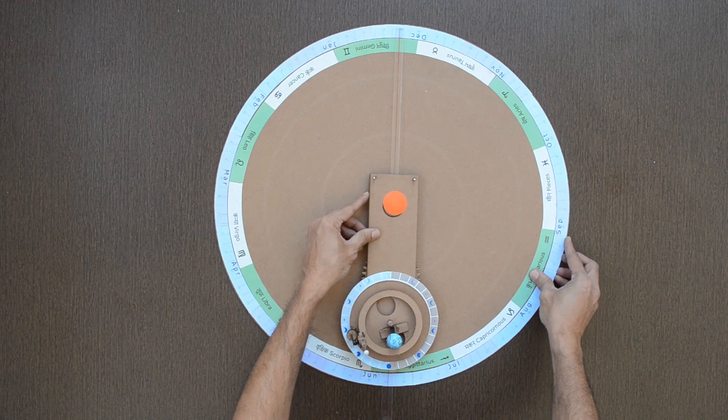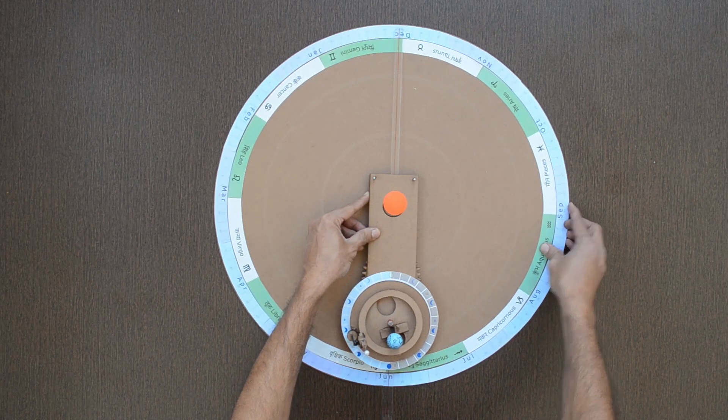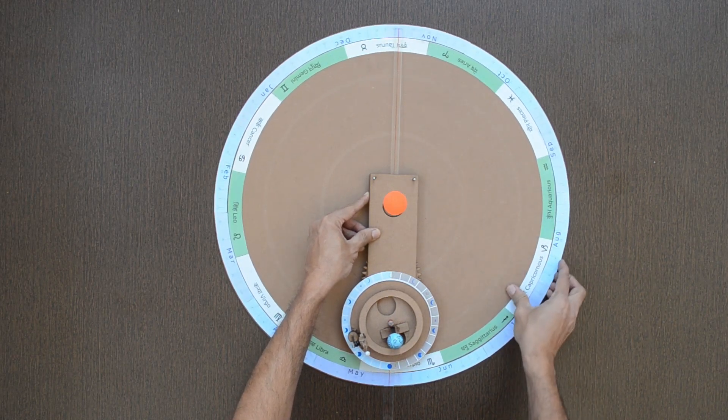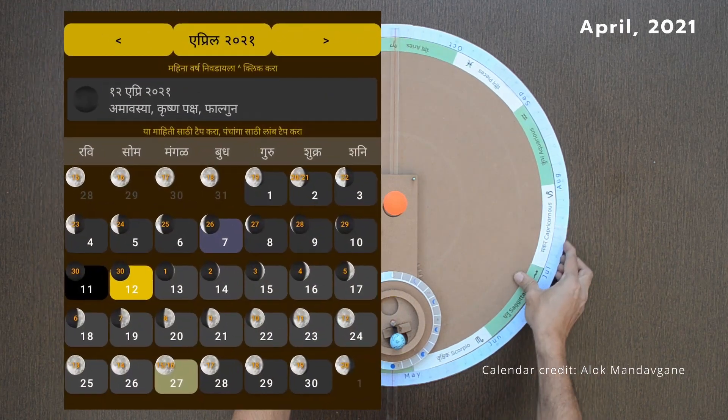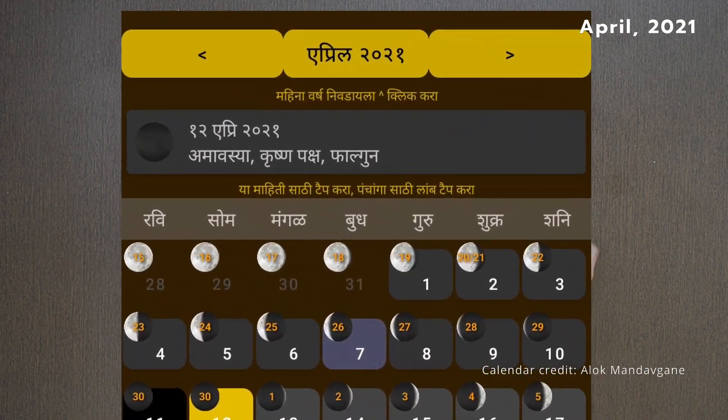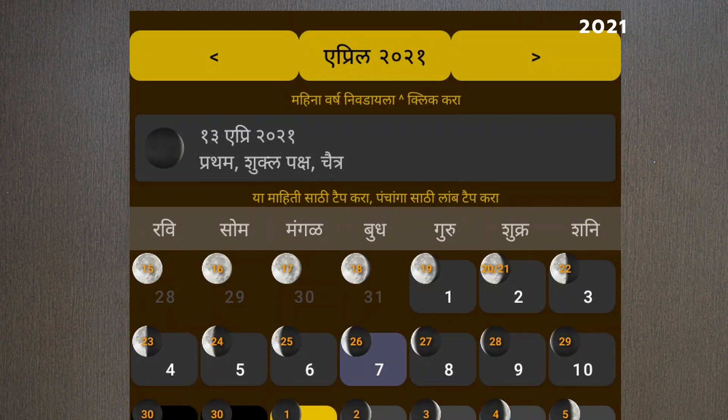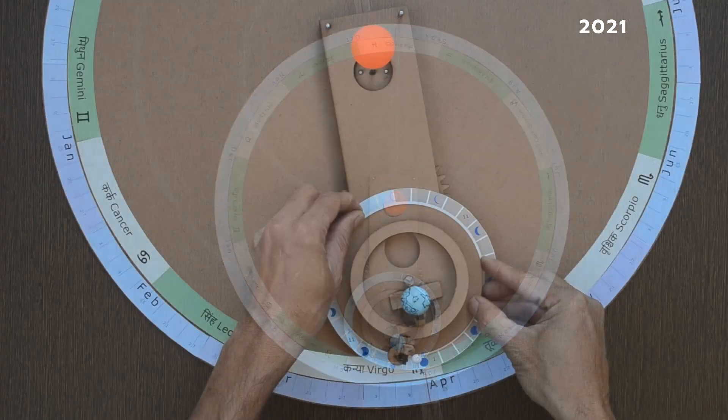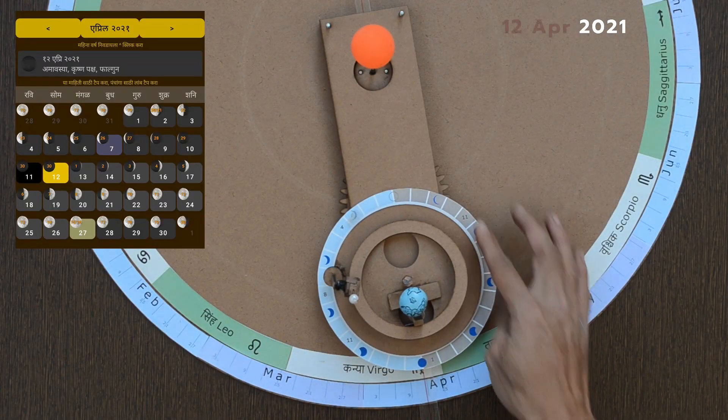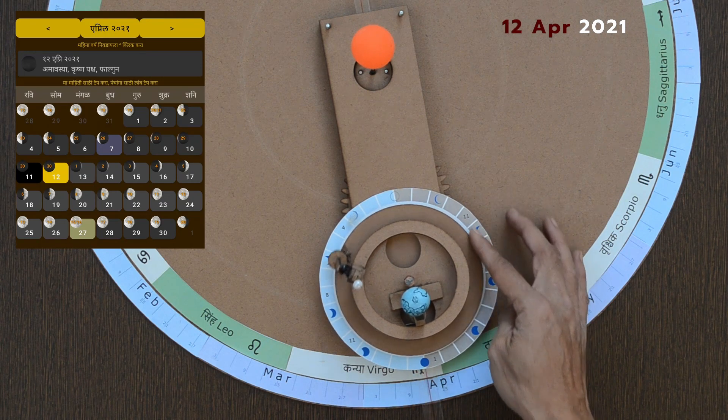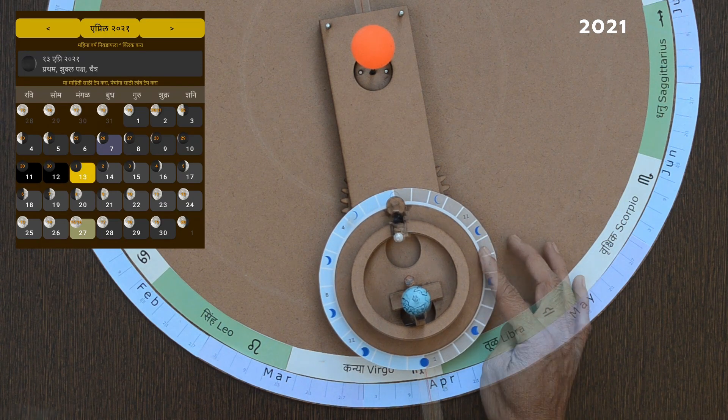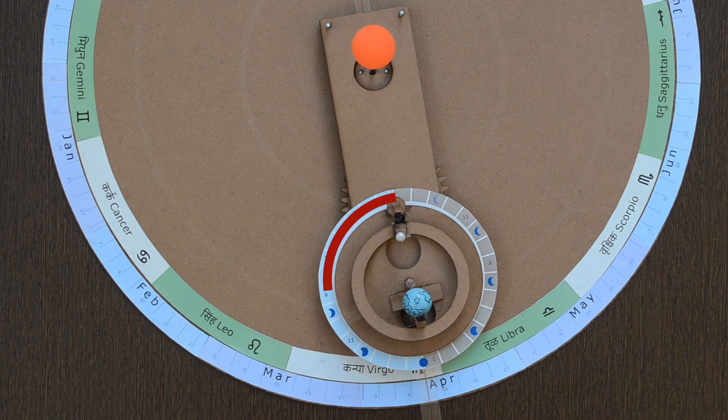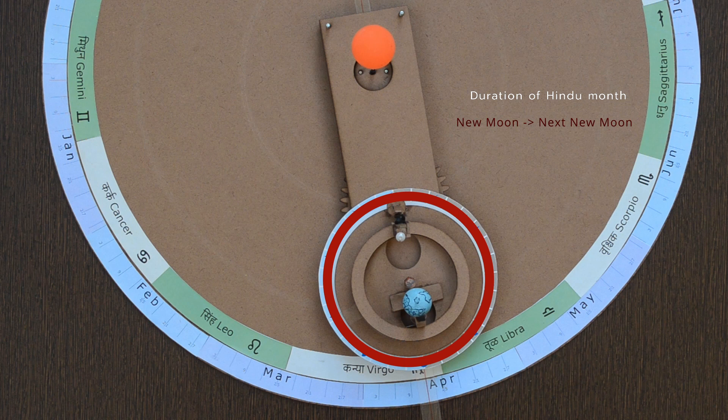Let us take help of the calendar to learn about the same. Month is April and year 2021. There is new moon or Amavasya on 12th April. Let us position the moon accordingly. Time taken by the moon to complete one revolution from new moon to next new moon is considered as one month in Hindu calendar.